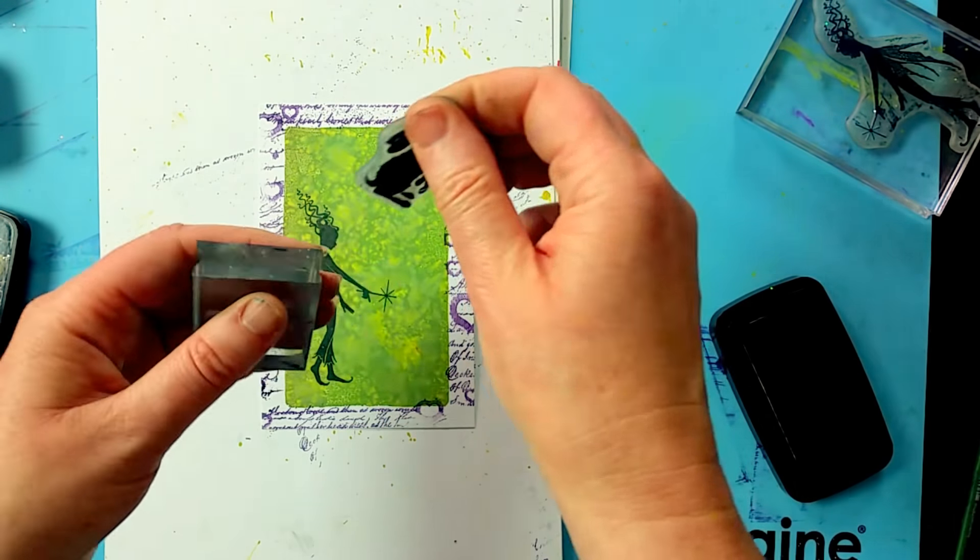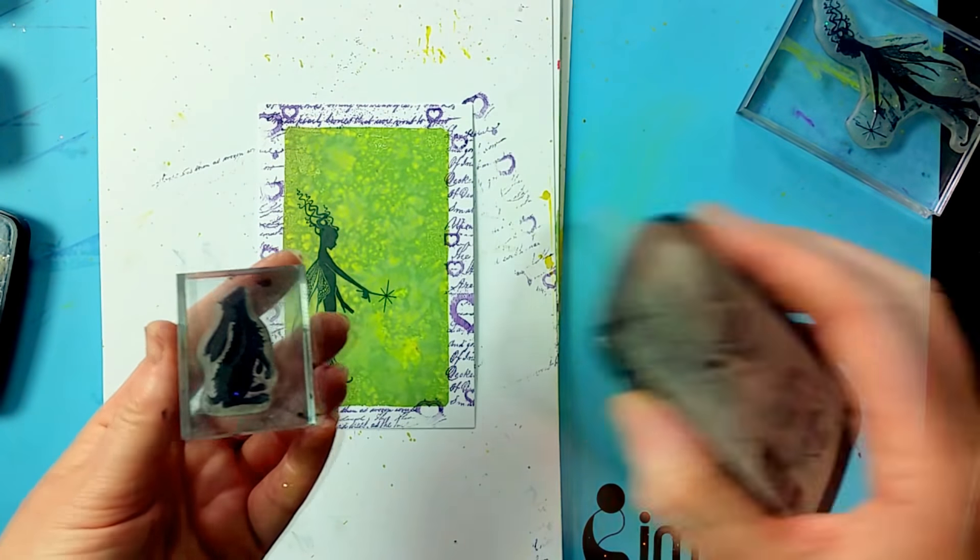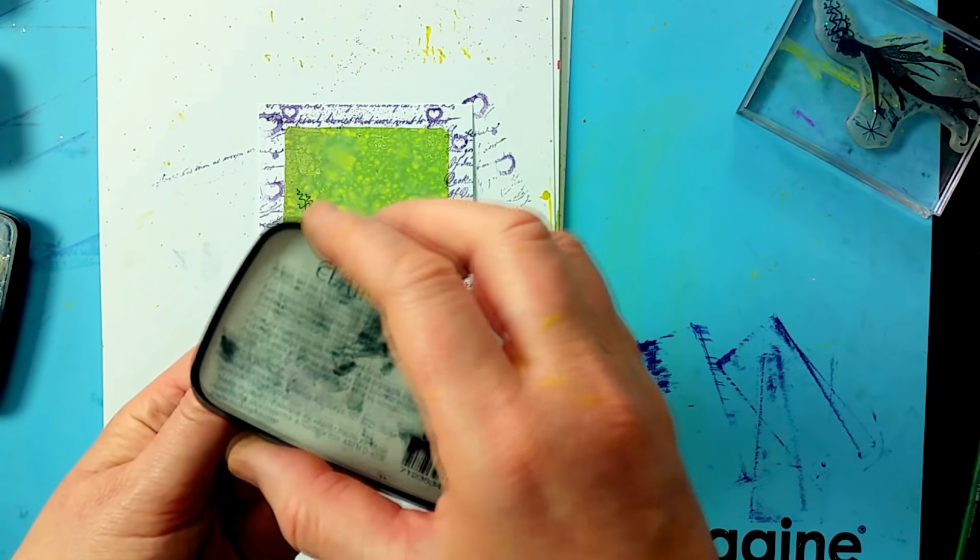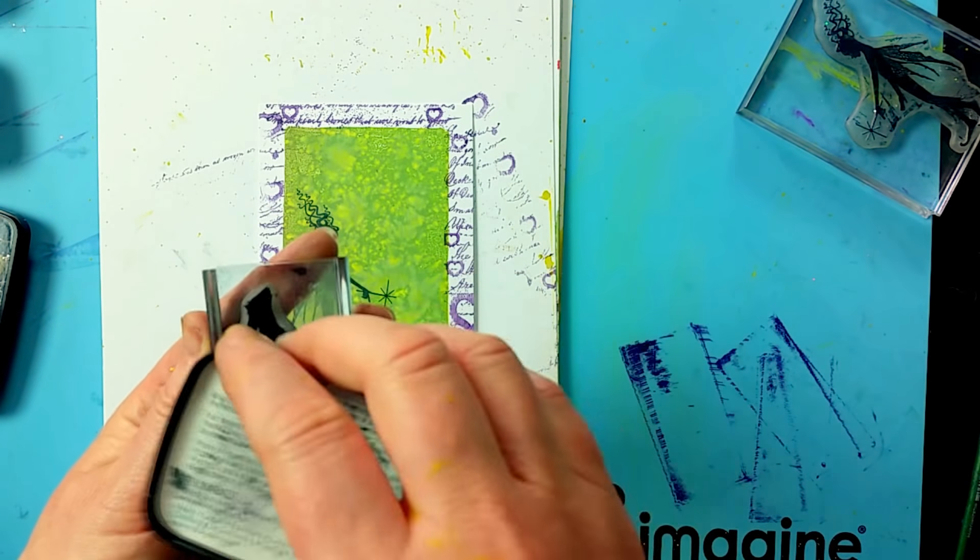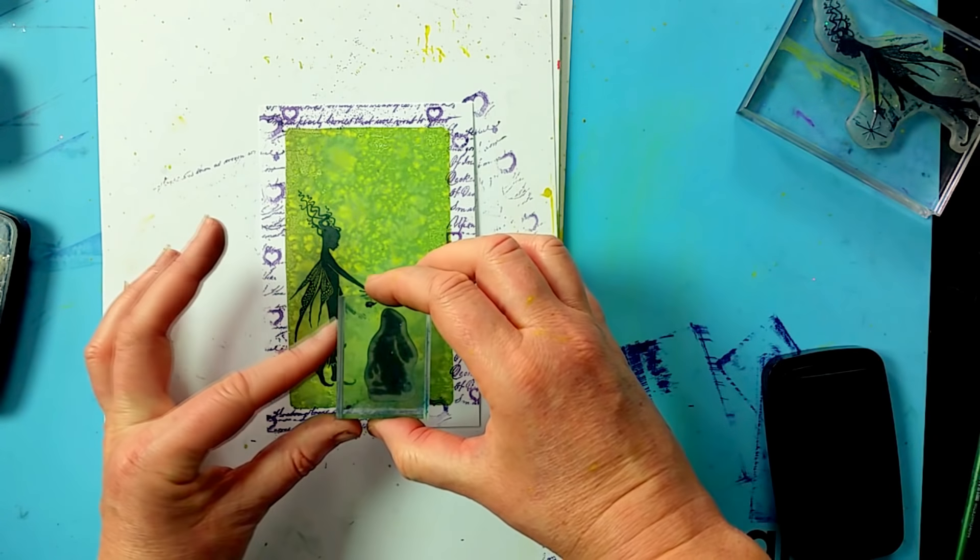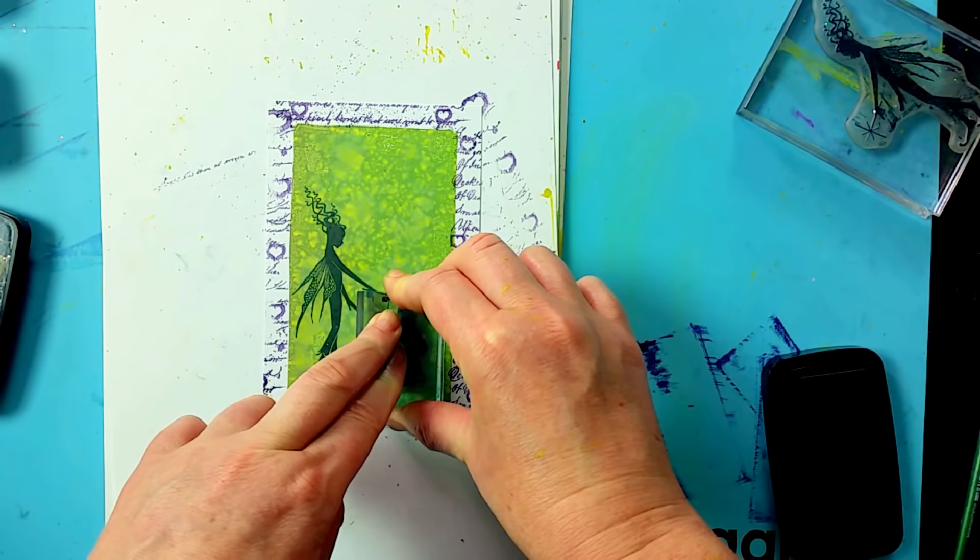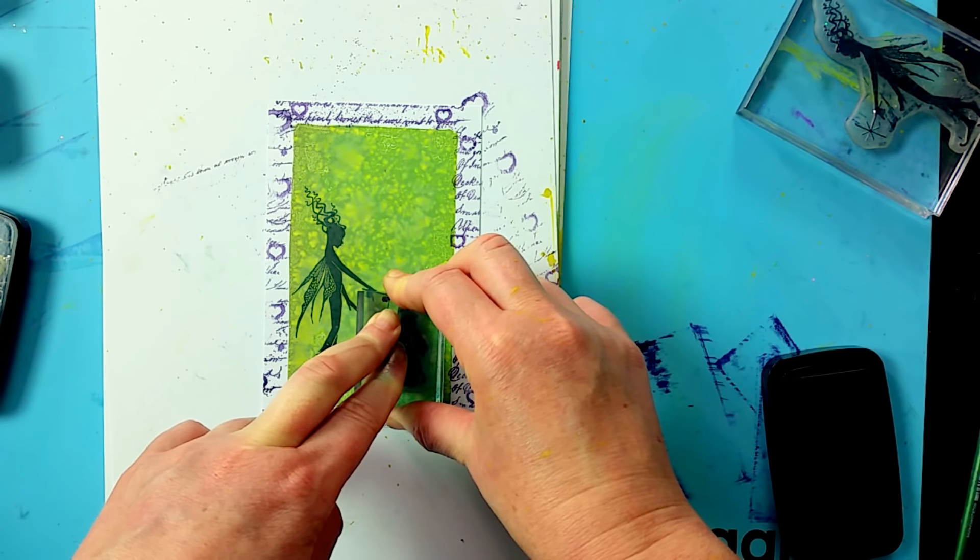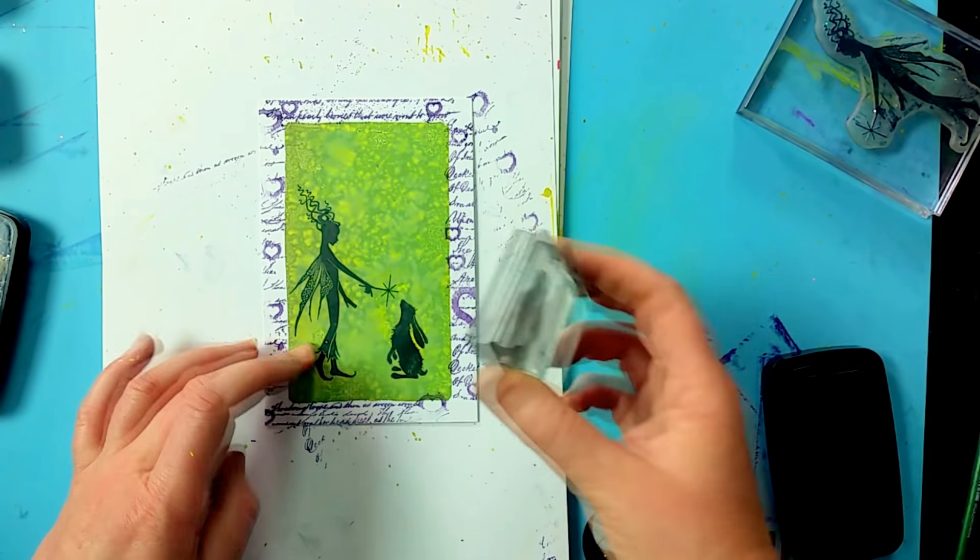And then taking one of our whimsical hares, again I'm inking up in the Nocturne. I'm popping that down next to her. There we go.